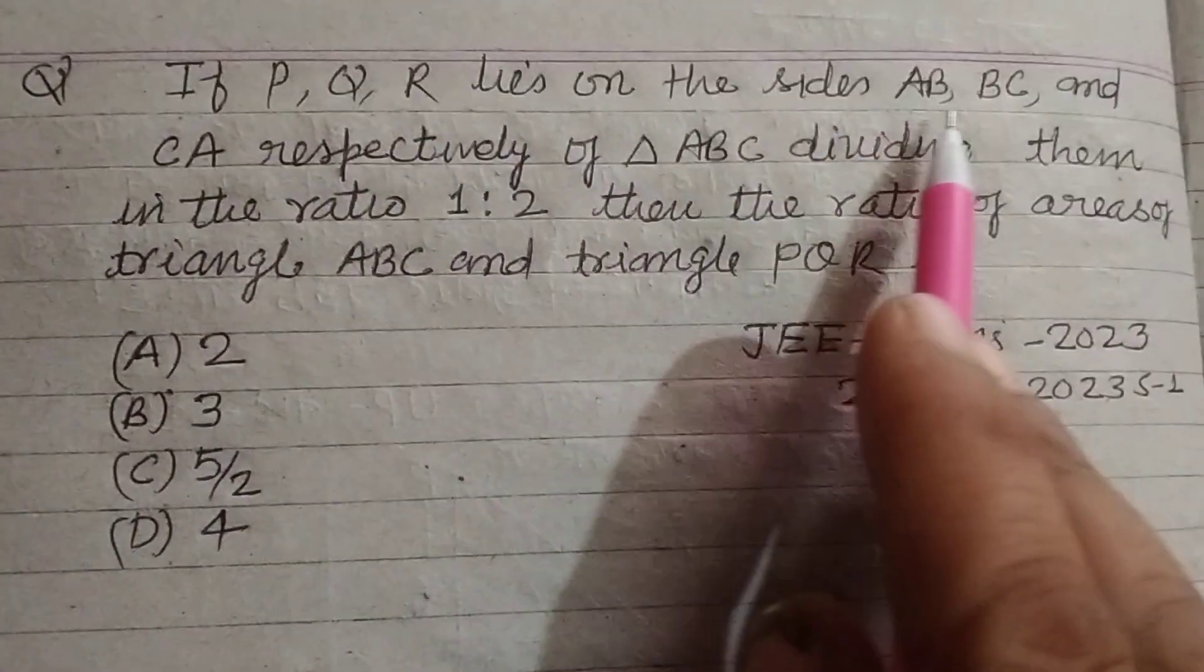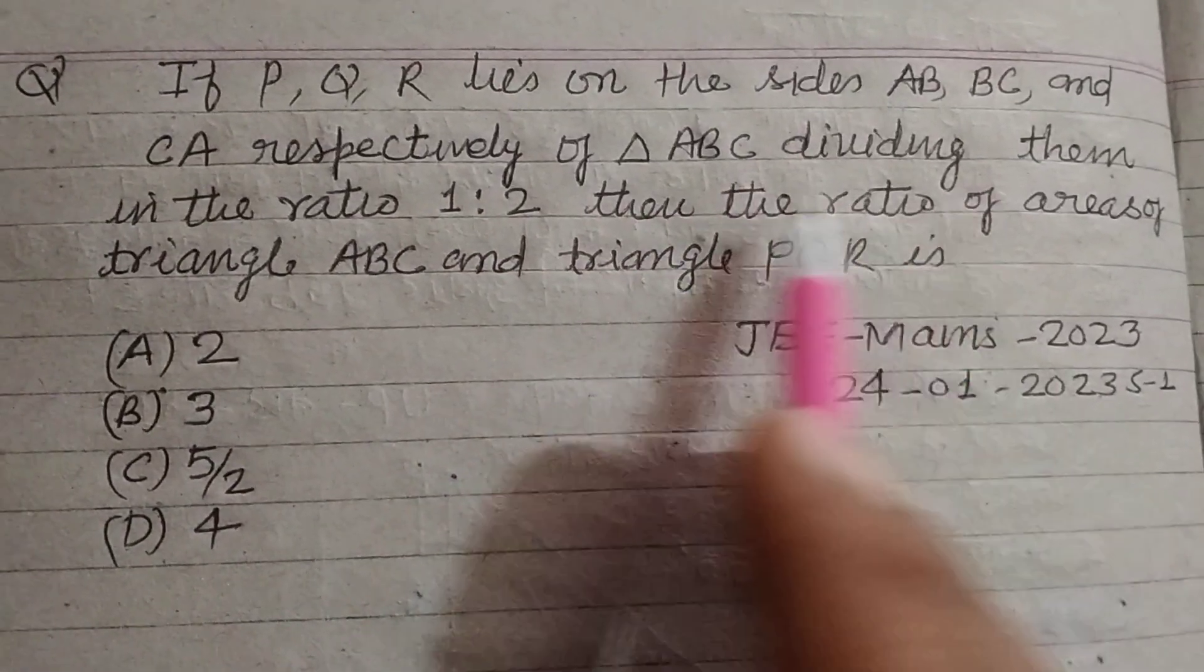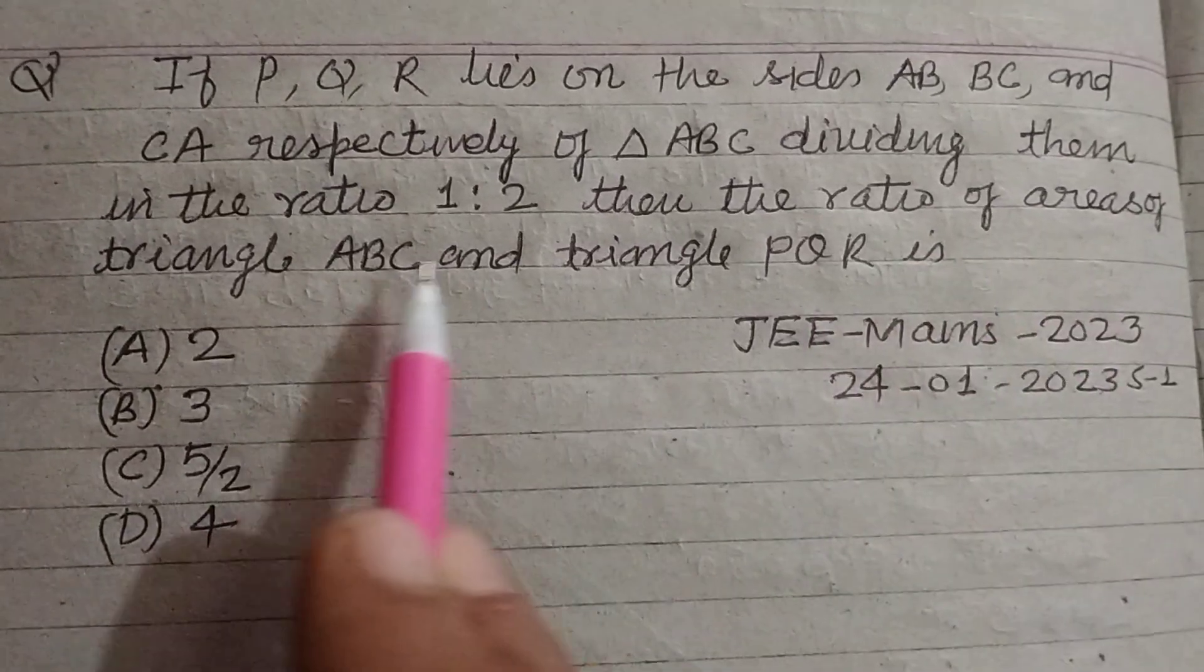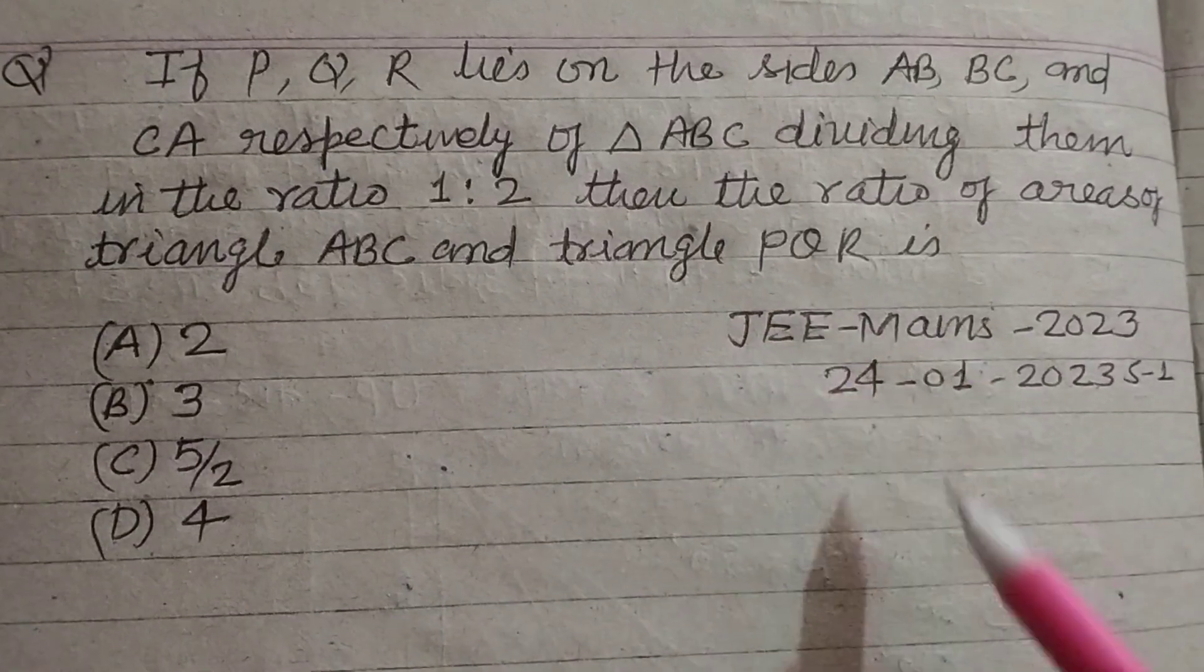If P, Q, R lie on the sides AB, BC, and CA respectively of triangle ABC, dividing them in the ratio 1:2, then find the ratio of areas of triangle ABC and triangle PQR.